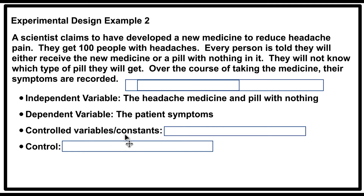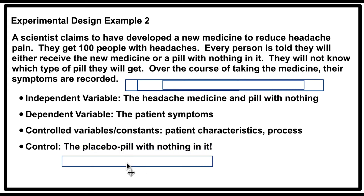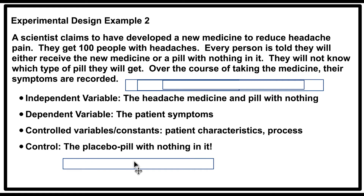What needs to be controlled or held constant throughout this experiment would be the patient characteristics. They need to make sure they are comparing people of the same age, the same gender, and looking at other symptoms or issues they might have. The control here is the placebo — the pill with nothing in it. The reason you do this is that the placebo, or the power of suggestion of just taking a pill you think might make your headache go away, is often enough to make your headache go away. That's why you have to have a control.